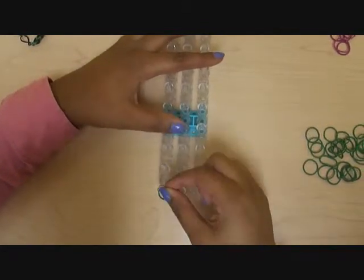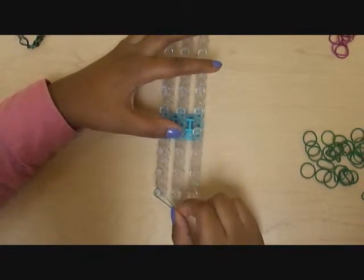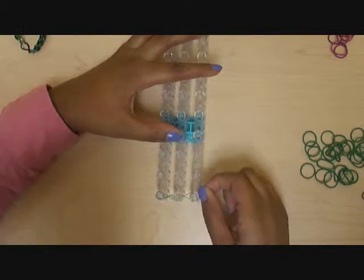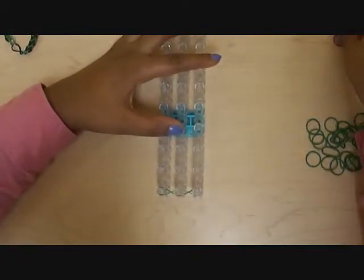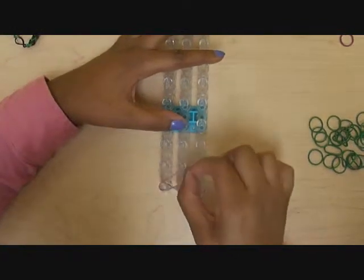So first you're going to take your first color and make a figure eight across all three pegs and then push those bands down. Get your next color and do the same exact thing.